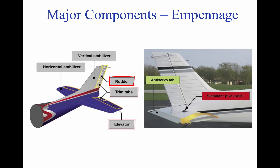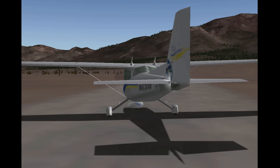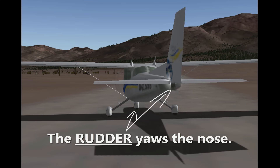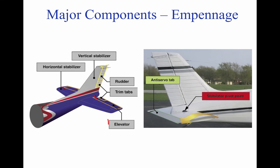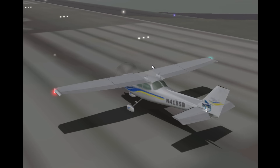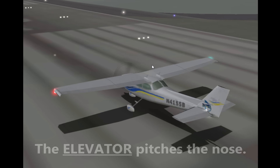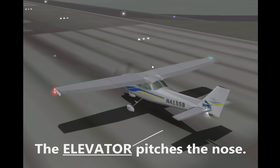The rudder is attached to the back of the vertical stabilizer. During flight, it is used to move the airplane's nose left and right. The elevator, which is attached to the back of the horizontal stabilizer, is used to move the nose of the airplane up and down during flight.